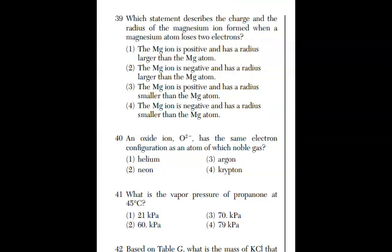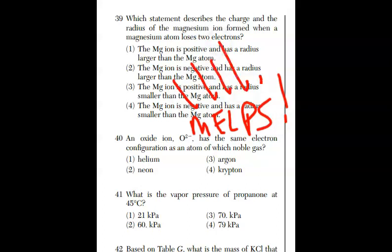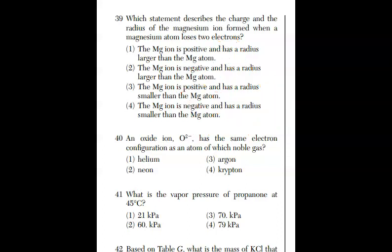In question 39, which statement describes the charge and the radius of a magnesium ion formed when a magnesium atom loses two electrons? I can't say this enough. MELPS helps. MELPS is a made-up word. Metals, electrons, lose, become positively charged, and smaller. MELPS definitely helps. So with that in mind, let's check out the answers. Magnesium is a metal. All metals are losers. They're losing electrons, which are negatively charged. That makes them positive. So right away, let's get rid of choice 2 and choice 4. Then, what do I know about the radius? The radius is going to be smaller. And there it is, choice 3. MELPS helps.